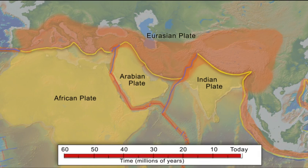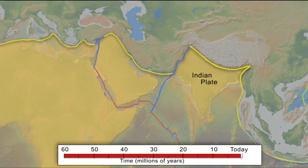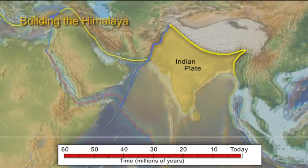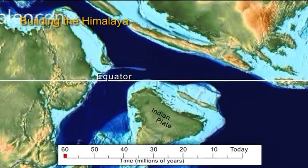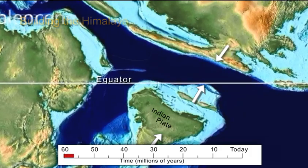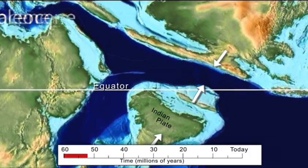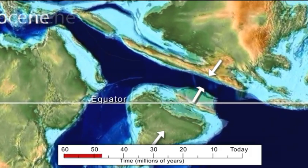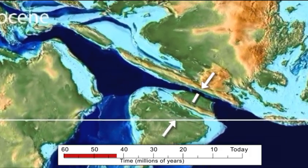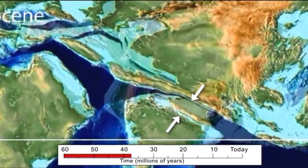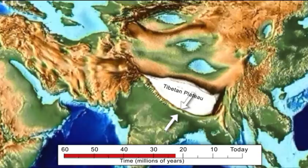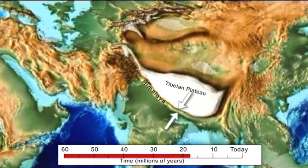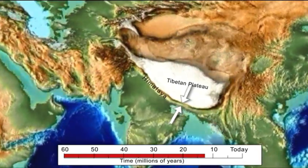Let's go back 60 million years to understand the plate tectonic history of the Himalayan region. About 50 million years ago, the Indian continent collided with southern Eurasia and began constructing the Himalayas and the Tibetan Plateau, the highest mountain range and the largest continental plateau on Earth.